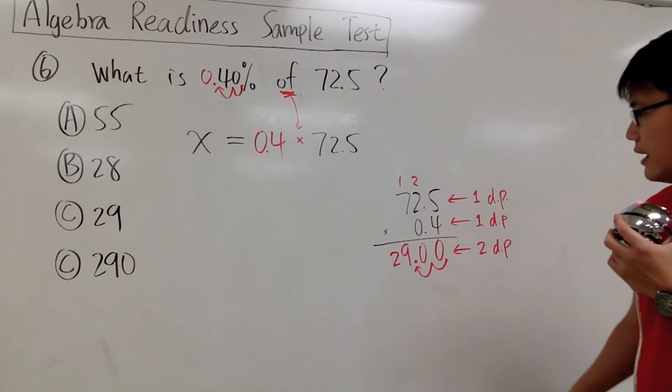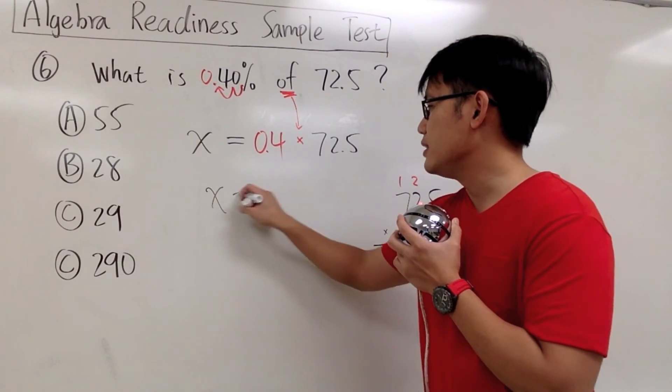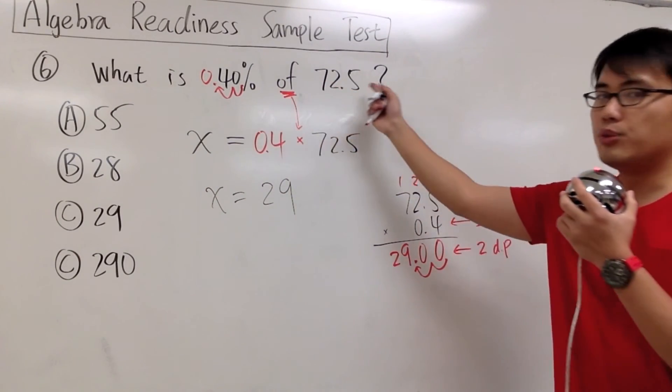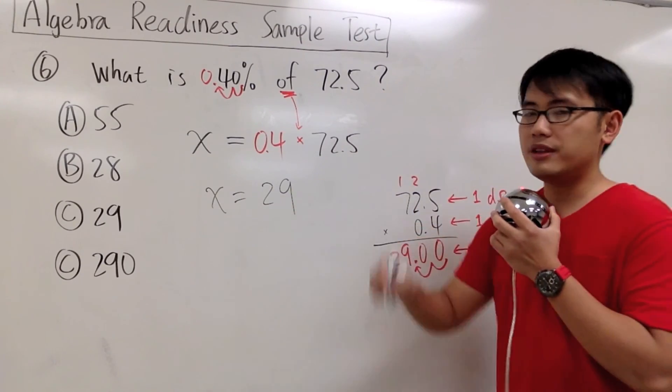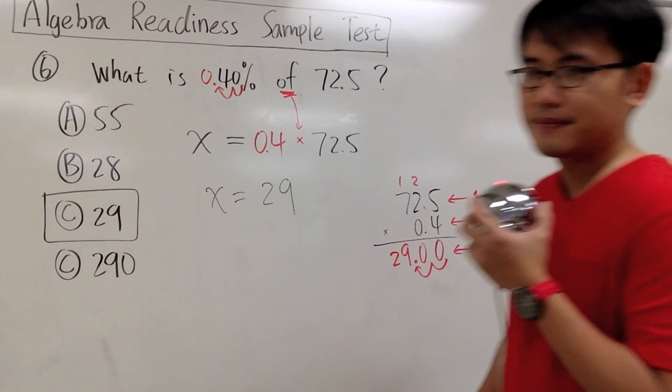So the answer is 29. x equals 29, therefore 40% of 72.5 is 29. Answer choice C. That's it.